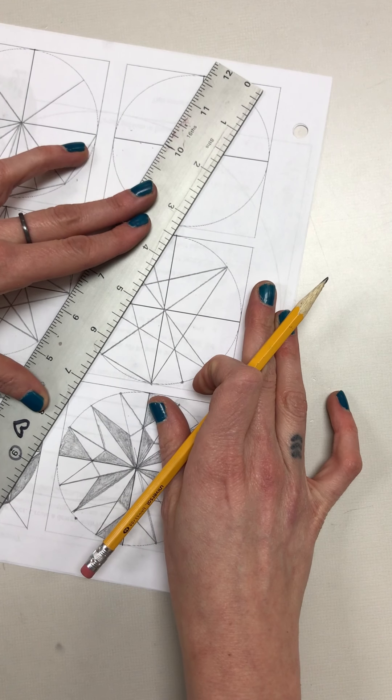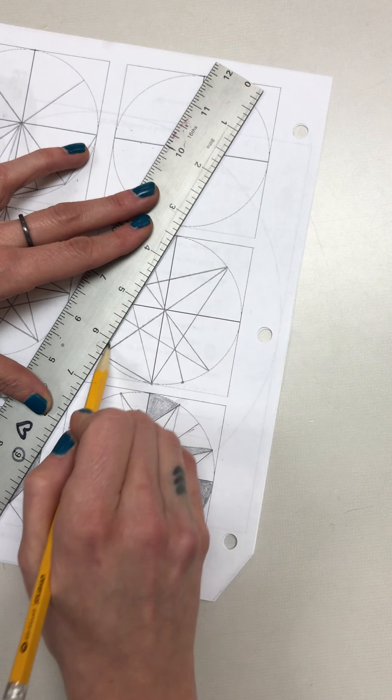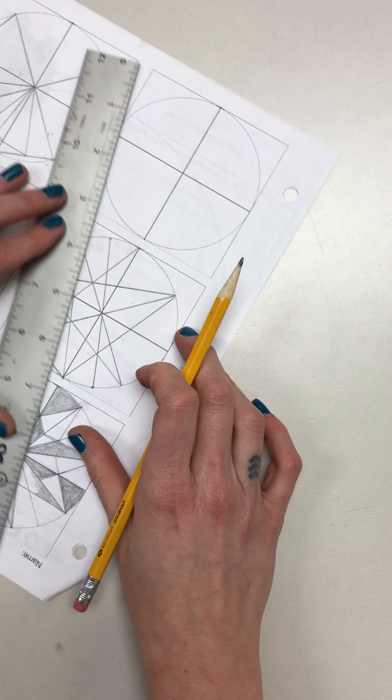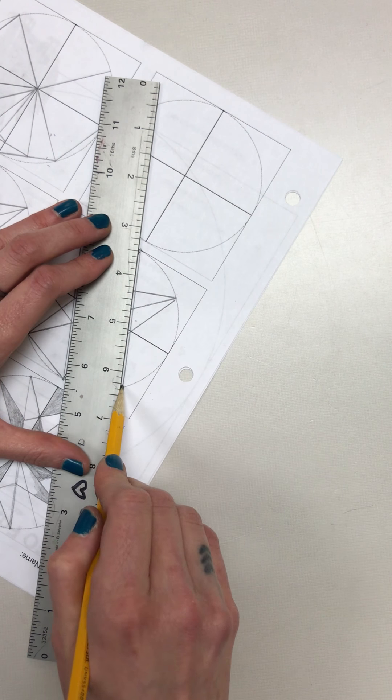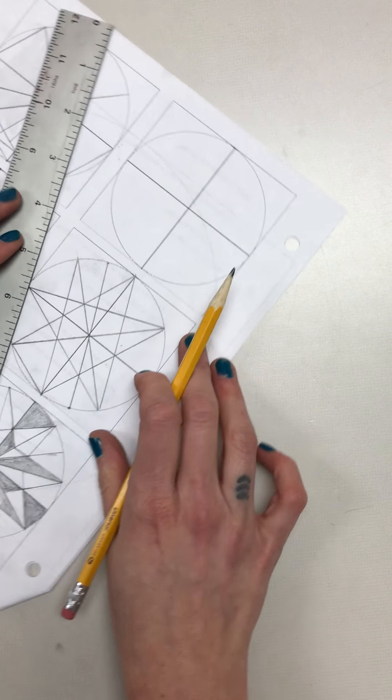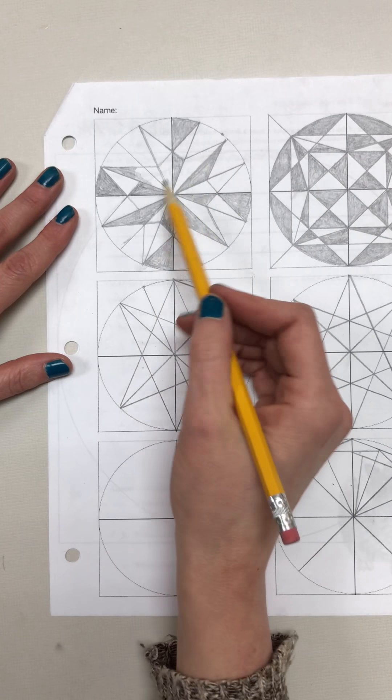If it doesn't work out, no problem—go on to the next circle and try it again. If you want to shade in some of these like I did on the top, you can start to think about positive and negative space.